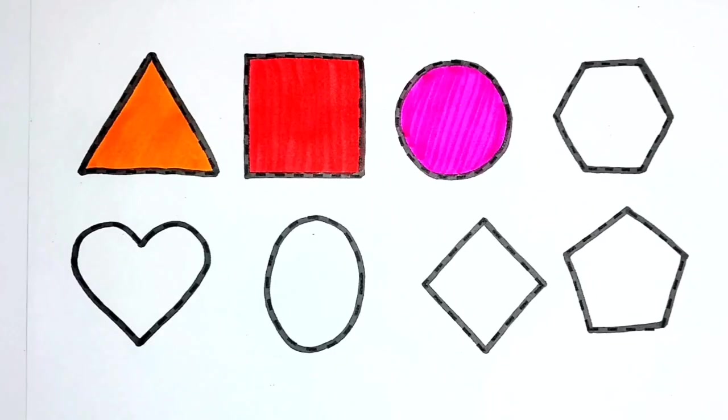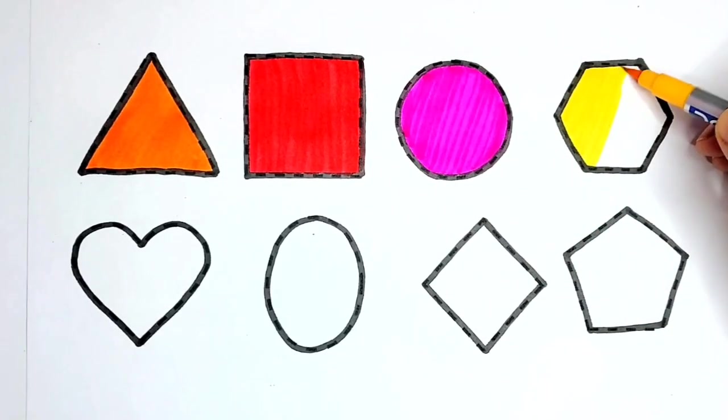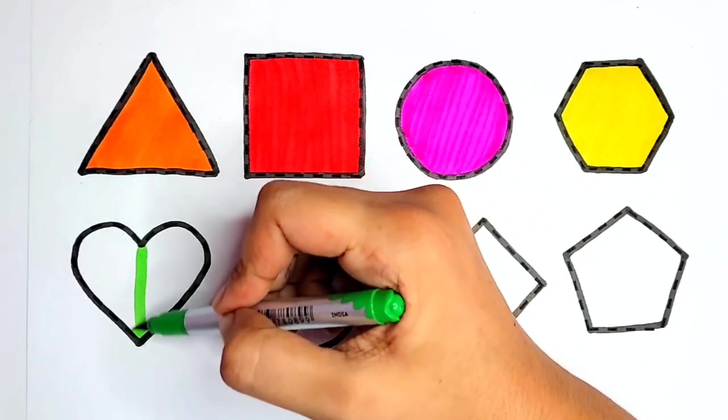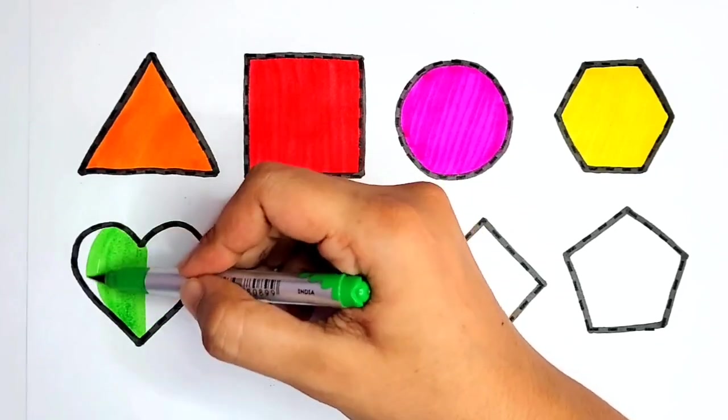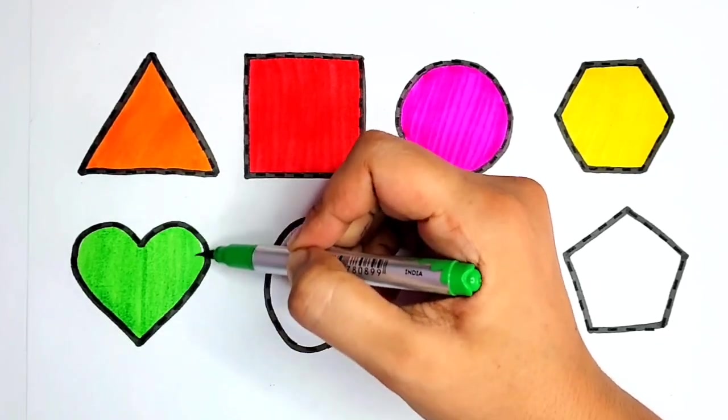Circle. Yellow color. Hexagon. Light green color. Heart.